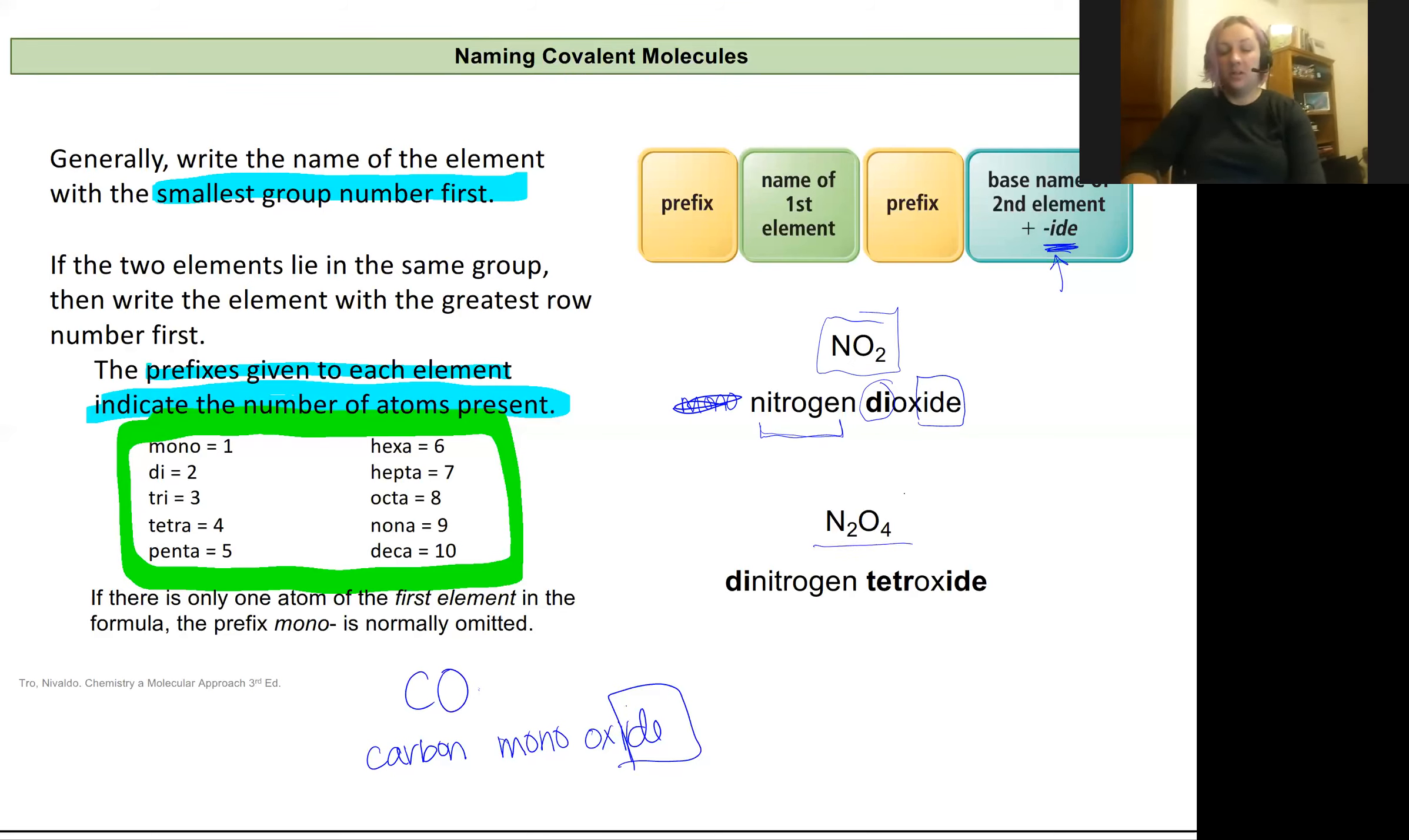Now if I have two nitrogen and four oxygen, then I am going to use a prefix to show that I have two nitrogens. I'll use di. It'll be dinitrogen. Again, I don't use a suffix. I don't change the word nitrogen at all since it comes first. Then I use tetra for four in front of the oxygen, and I change the ending to IDE. So when I see these prefixes, it's a big red flag that I have an organic or a covalent molecule that I'm working with rather than an ionic compound.